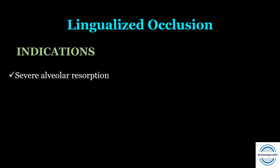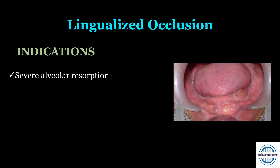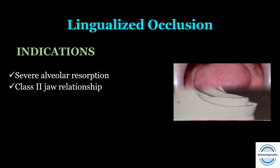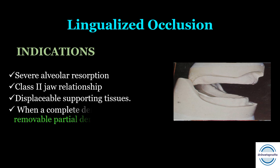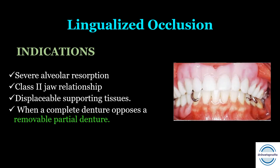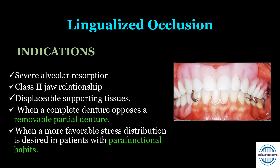Indications of lingualized occlusion: severe alveolar resorption with flat ridges, Class II or other abnormal jaw relationships, displaceable supporting tissues, when a complete denture opposes a removable partial denture, and when more favorable stress distribution is desired in patients with parafunctional habits. The indications of monoplane and lingualized are almost the same, but lingualized is preferred because it offers better aesthetics and better chewing efficiency compared to monoplane.